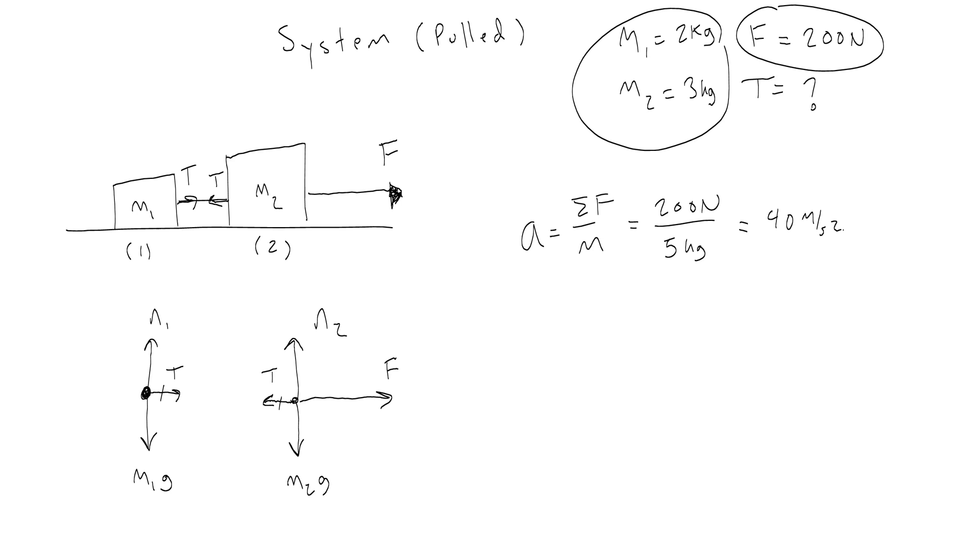So once you have that acceleration, I can figure out what the tension is. I could write an equation of net force for 1. It would just be tension, because there's no other forces acting on it. Or I could write an equation of net force for 2, which would be F minus T. Now either of these net forces I can find, because I know what the mass of each thing is, and I know what the acceleration that they both have is. So for the net force on 1, it would be 2 kilograms times 40 meters per second squared, so 80 newtons. And then for the net force on the second block, it would be 3 times 40, or 120 newtons.